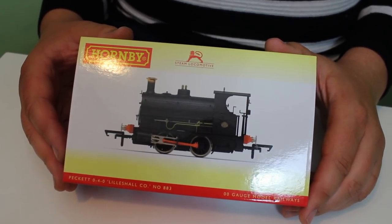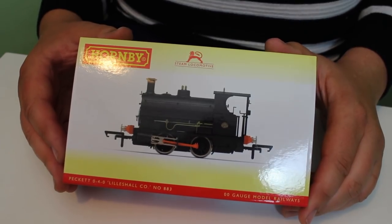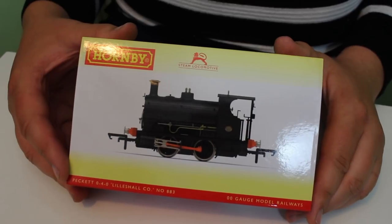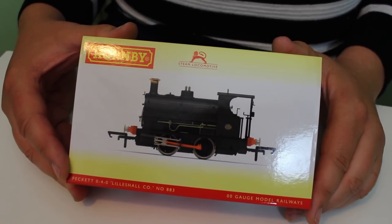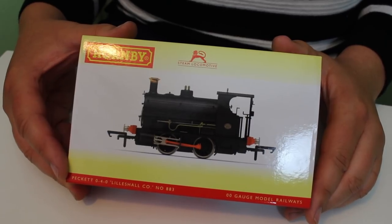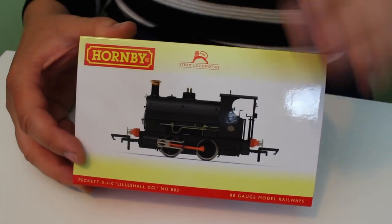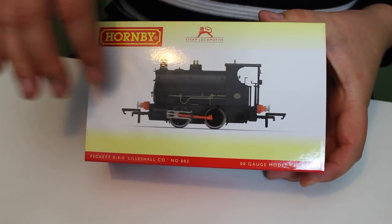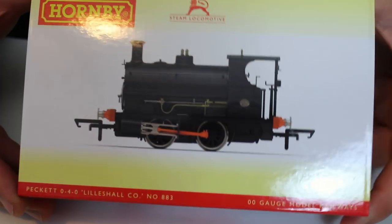The gougers got hold of them and they turned up on eBay for three, four hundred pounds each and you'd have to think the old adage, a fool and their money are easily parted, which does make the question how they got together in the first place. But the next batch has turned up and we've got here the all over plain black version, Lillis Hall number 10.